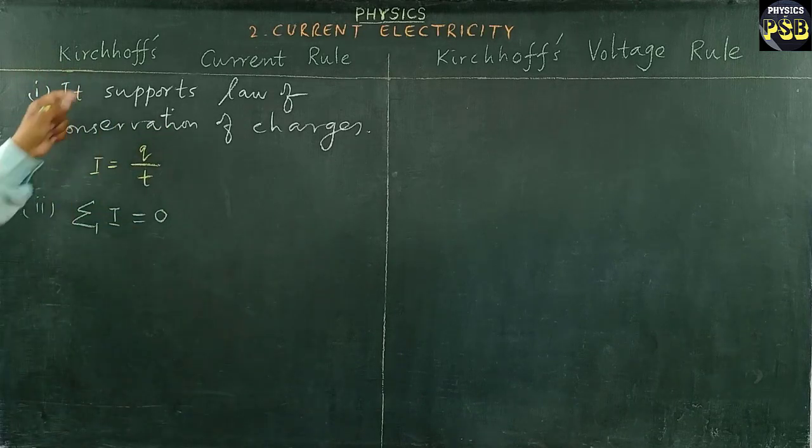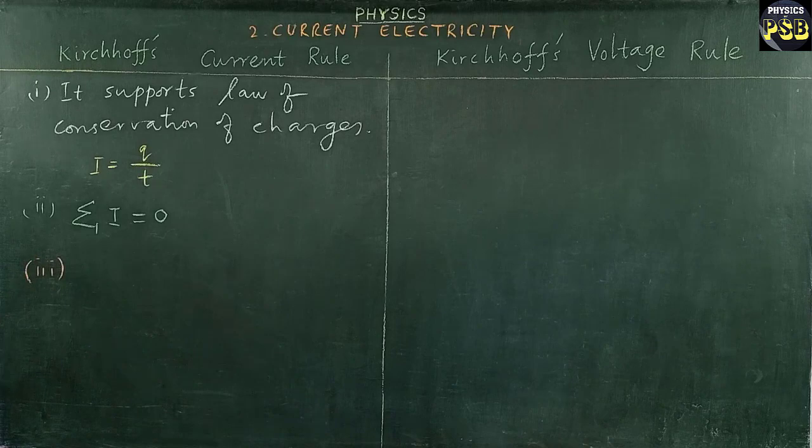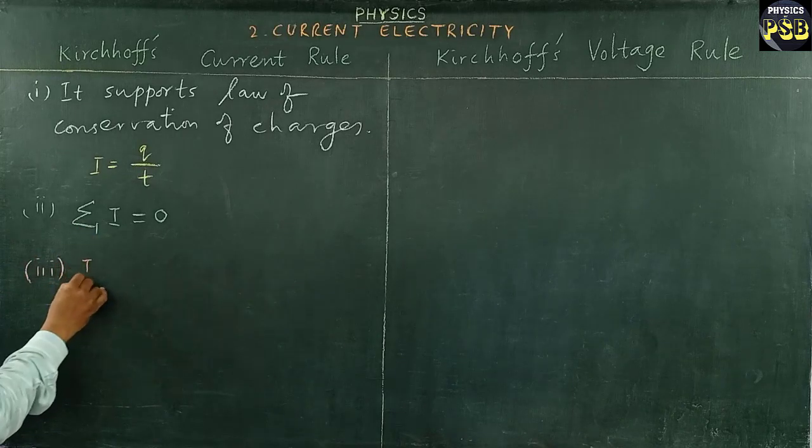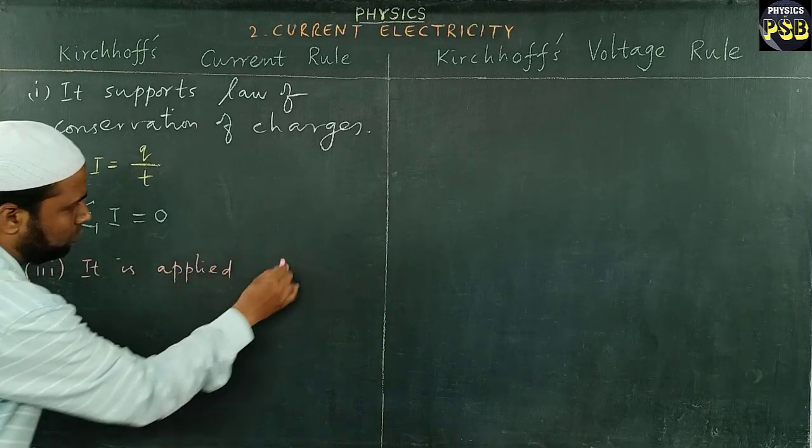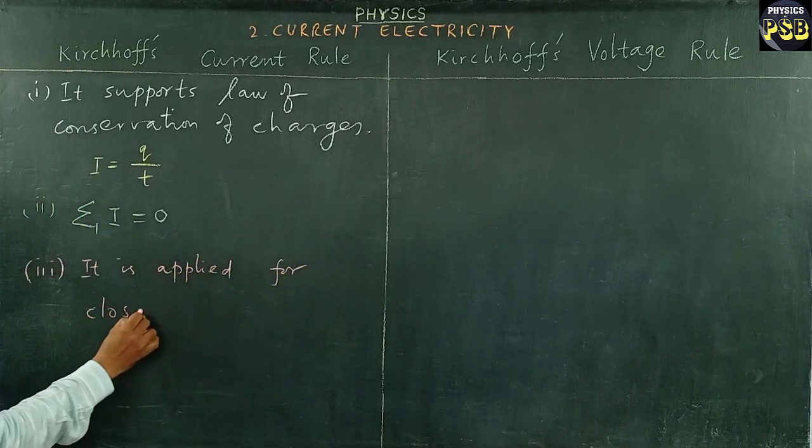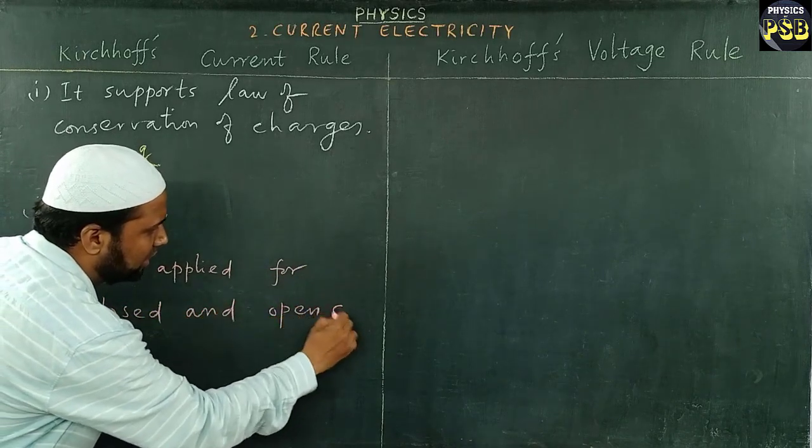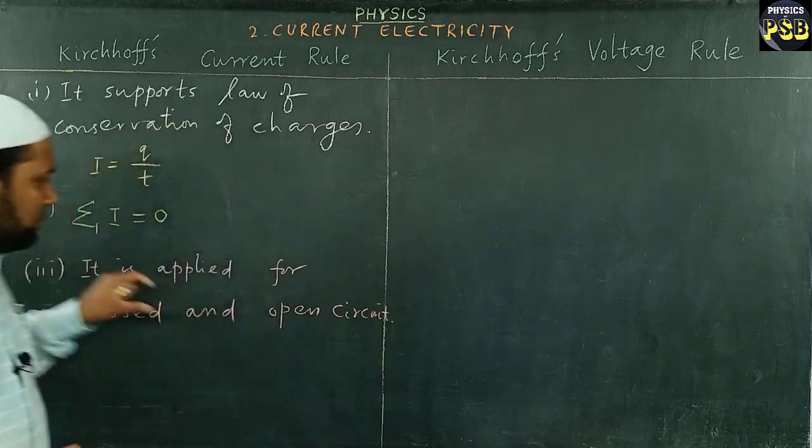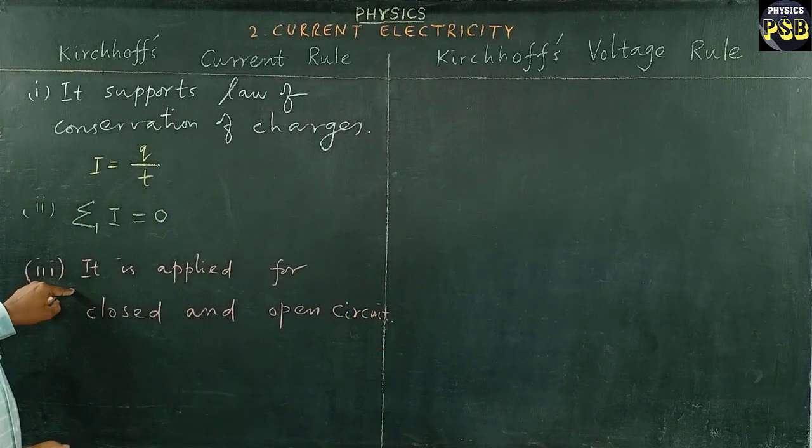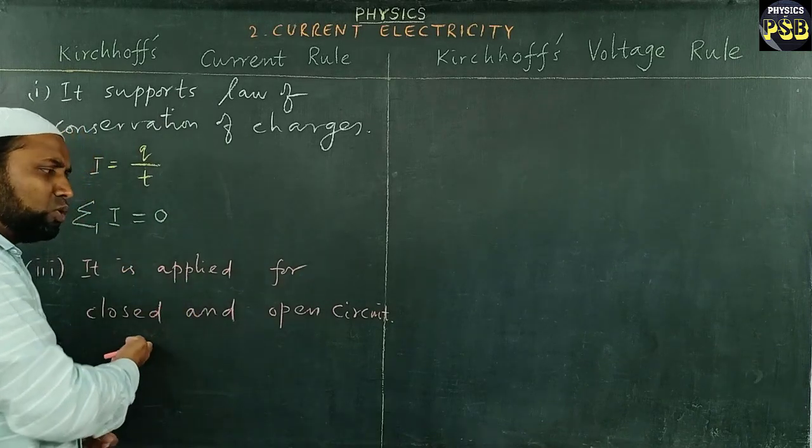The next thing: Kirchhoff's current rule is applied for closed and open circuit. It is particularly used to find the current meeting at a junction. It doesn't matter whether the circuit is closed or open.